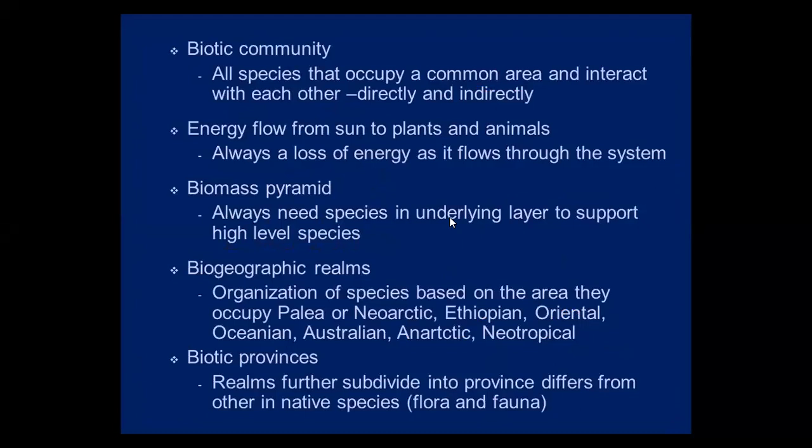Let's start off with an ecosystem. An ecosystem is all the living and non-living parts of an area. We have a biotic community — that's all species that occur in a common area and interact with each other directly or indirectly. For example, the chinchillas, the Abrocoma species, the Octodon degus — these are all small rodents that live in the same area and occupy the same community.